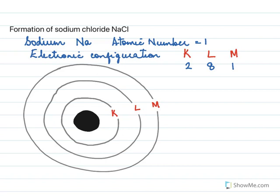In the first shell it has got two electrons — so here you have one, one, two electrons. In the second shell it has got eight electrons: 1, 2, 3, 4, 5, 6, 7, 8. And in the last shell it has got just one electron.